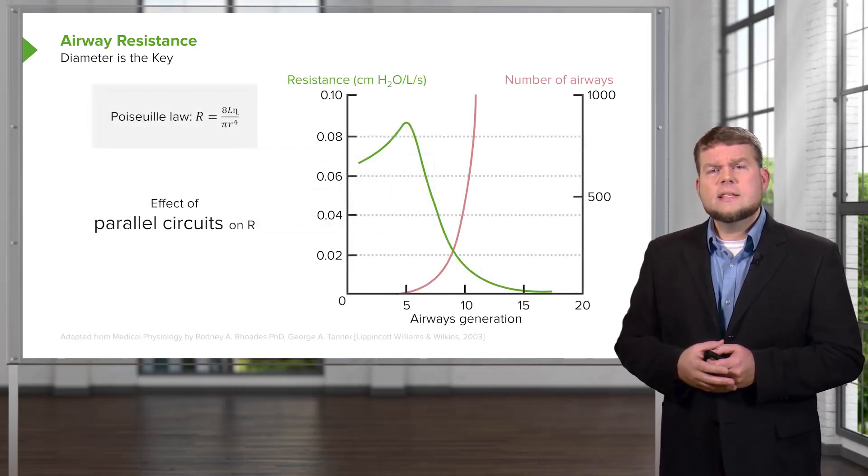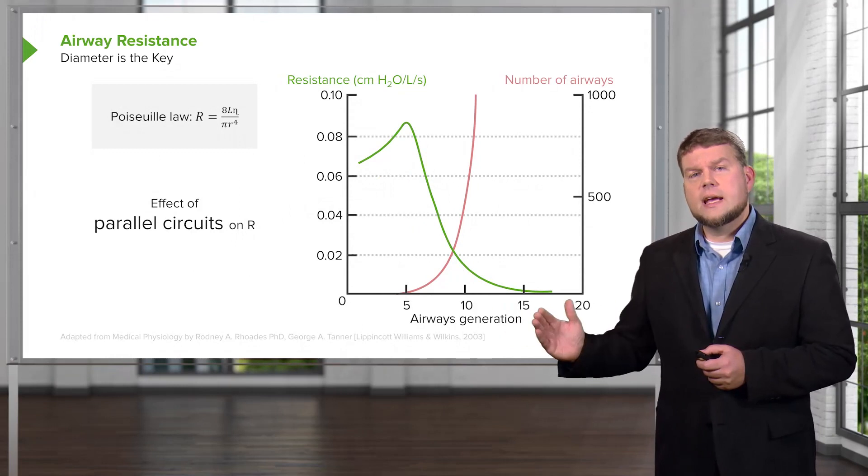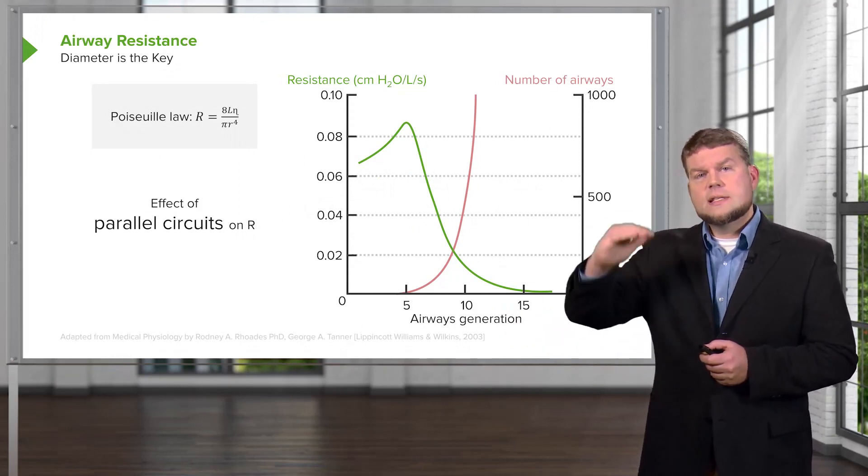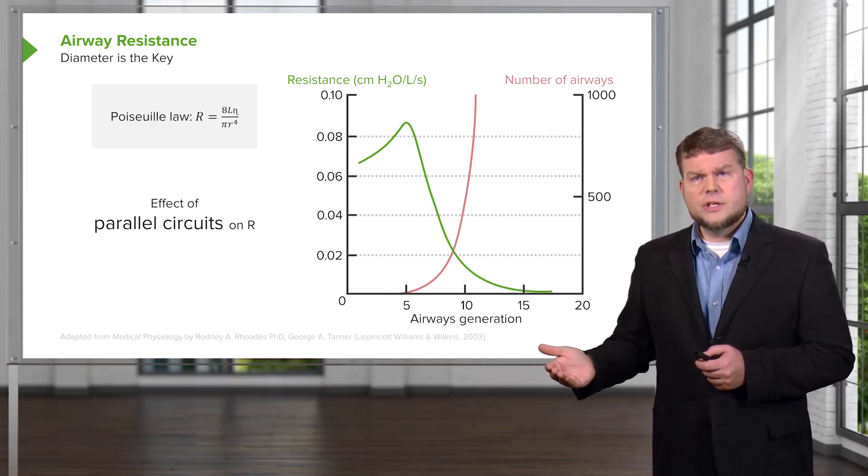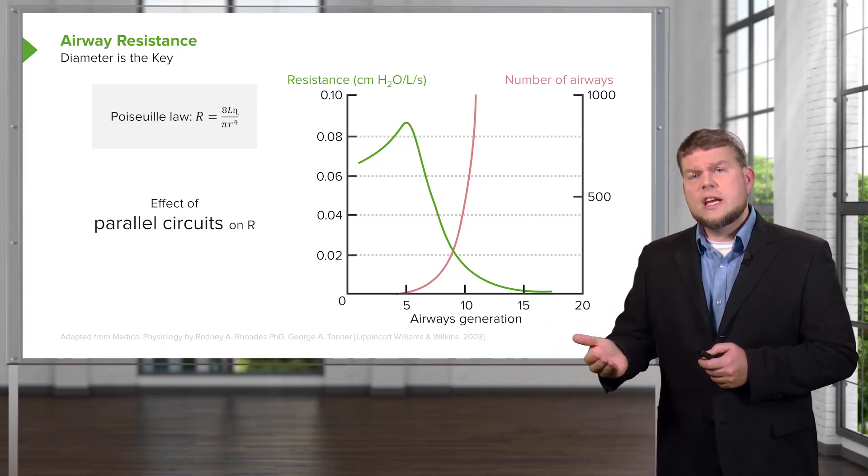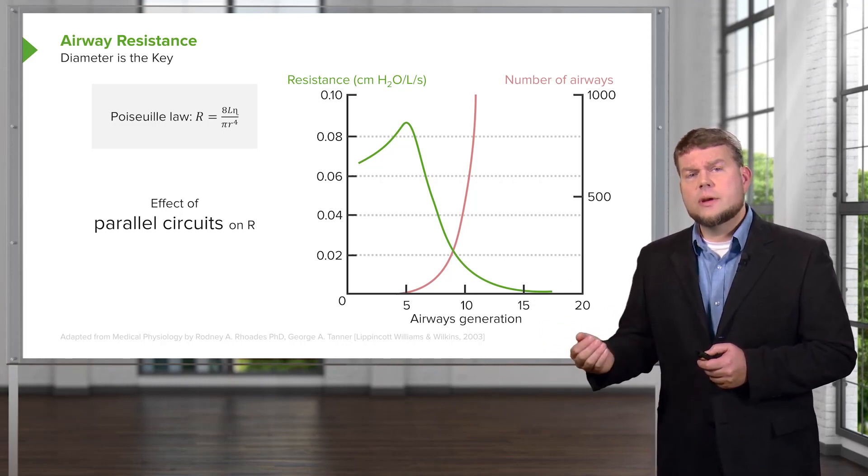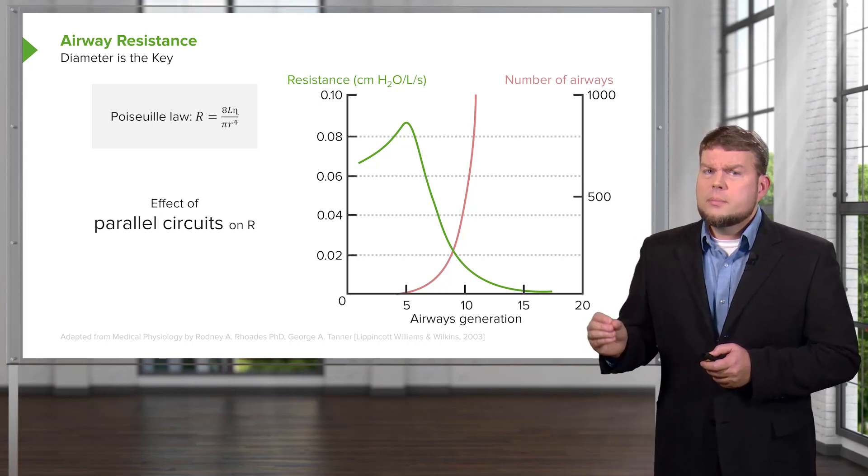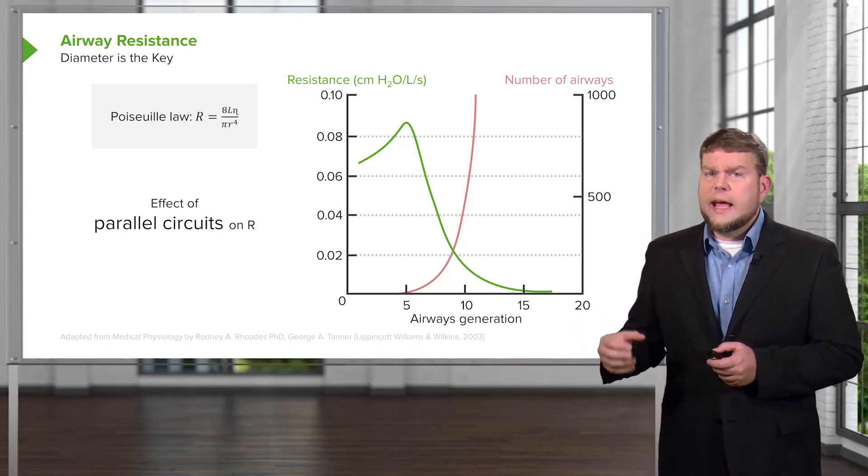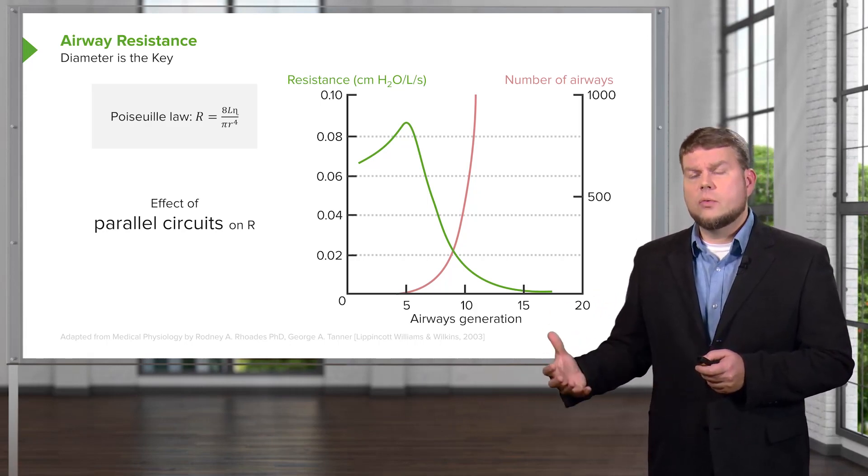If you look at this kind of graph here where you have airway generation on the x-axis and you have resistance along the y-axis, hopefully you can appreciate that there is a change in the amount of resistance as you increase the number of airways. This means that as you add airways to the system, you decrease its overall resistance.